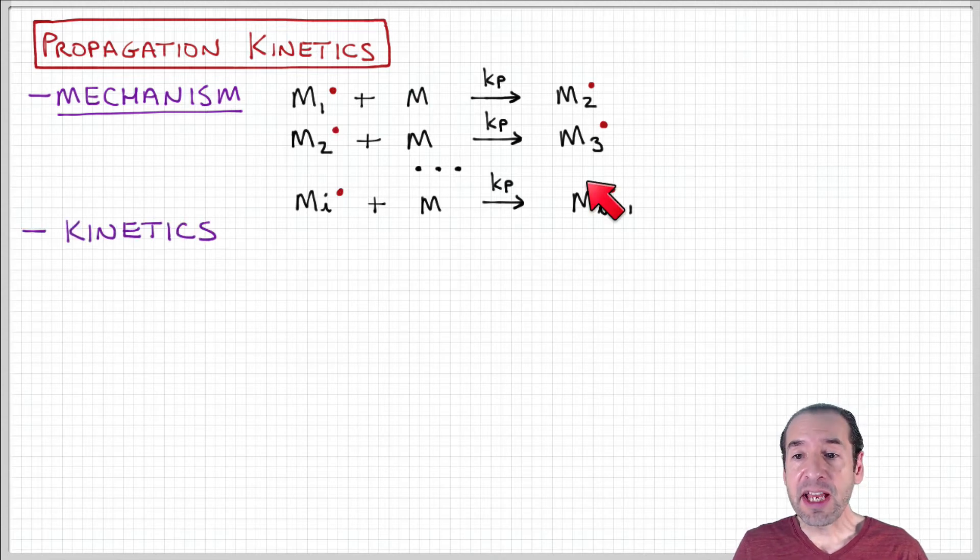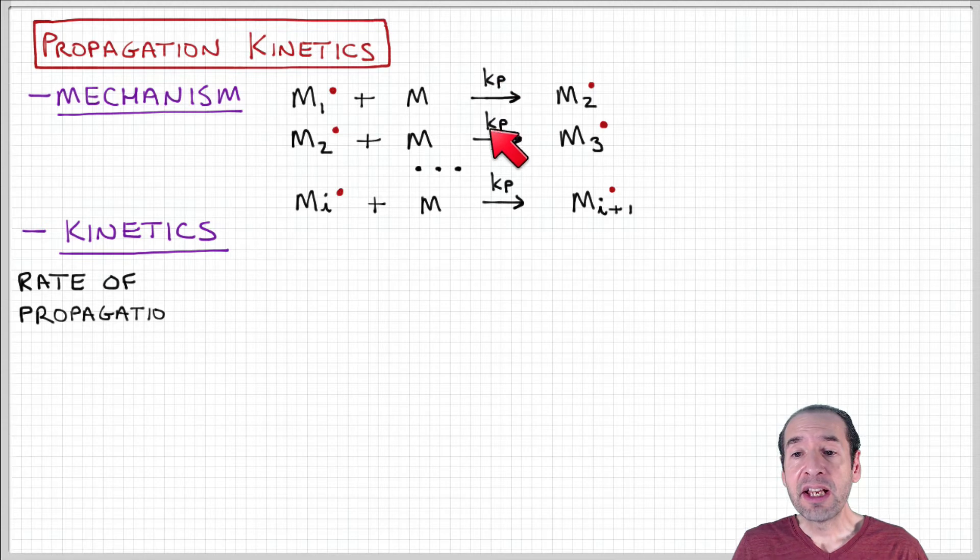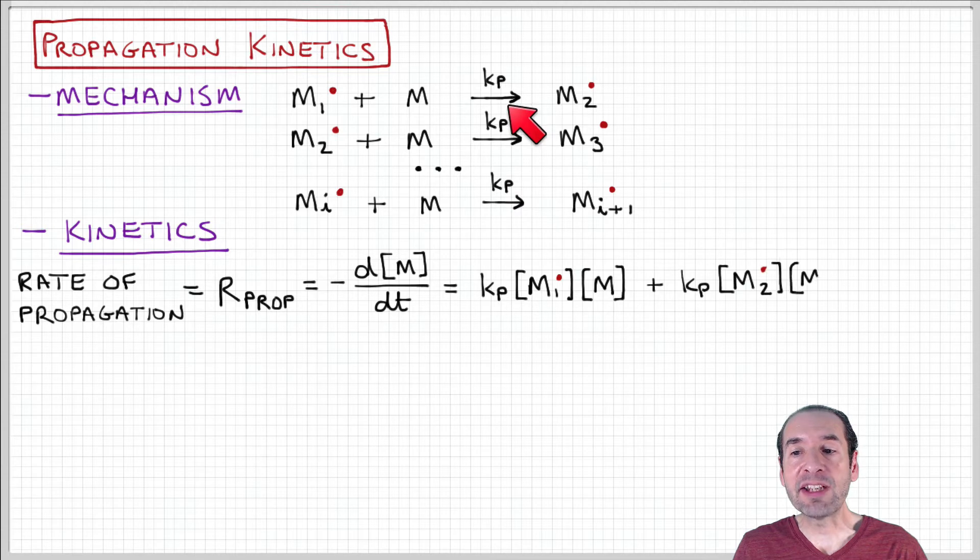In terms of the kinetics, each of these processes is assumed to have the same rate constant, k sub p, which is the propagation rate constant.